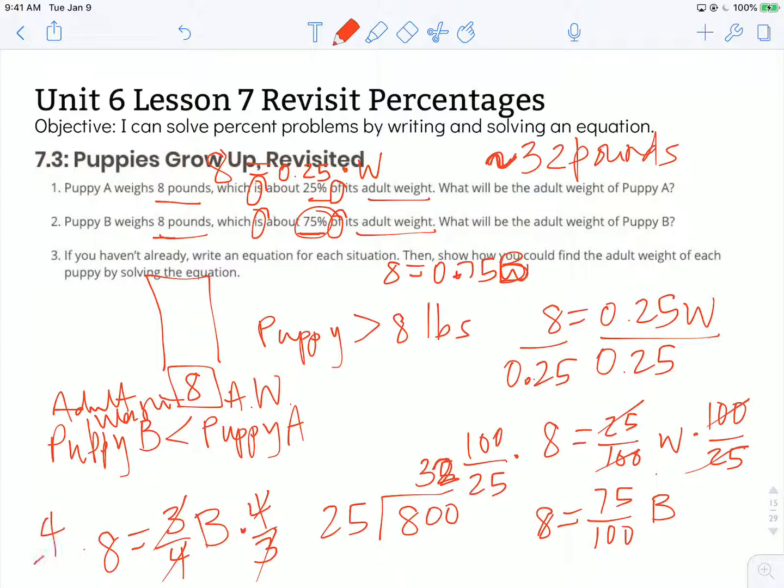I'm going to multiply that by 4 thirds. So 8 times 4 is 32 divided by 3 is... So 3 goes into 2 zero times. It's going to be about 10 and 2 thirds pounds when it's an adult. So approximately 10 and 2 thirds pounds, which I'm just going to go ahead and say that's about 11 pounds.